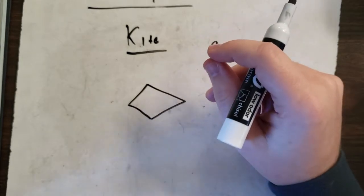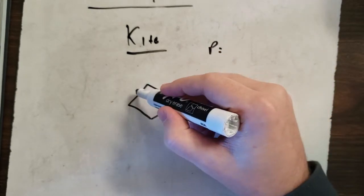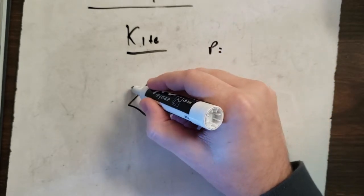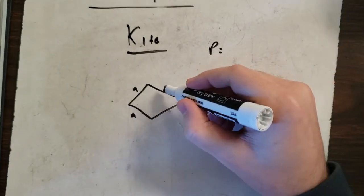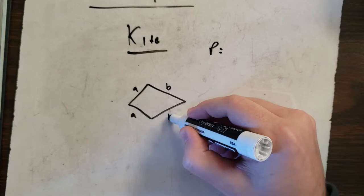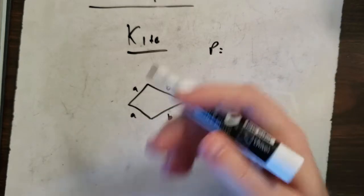The thing with a kite that you should know is that your short sides are always the same number, and your long sides are always the same number.